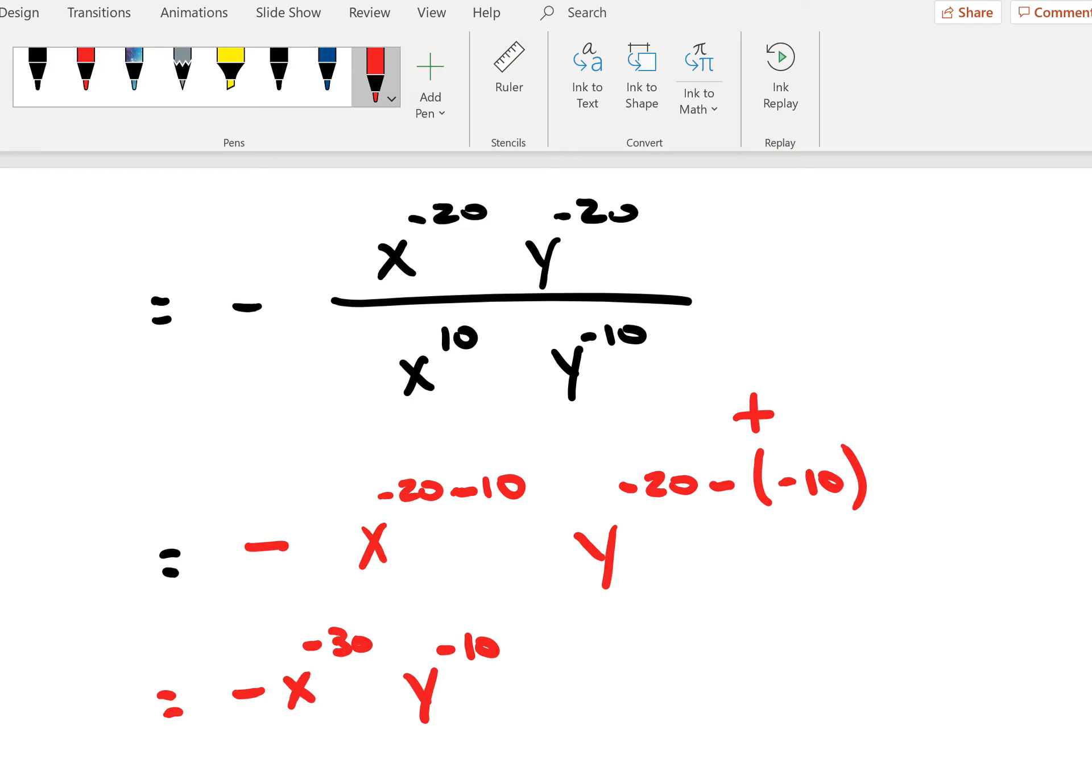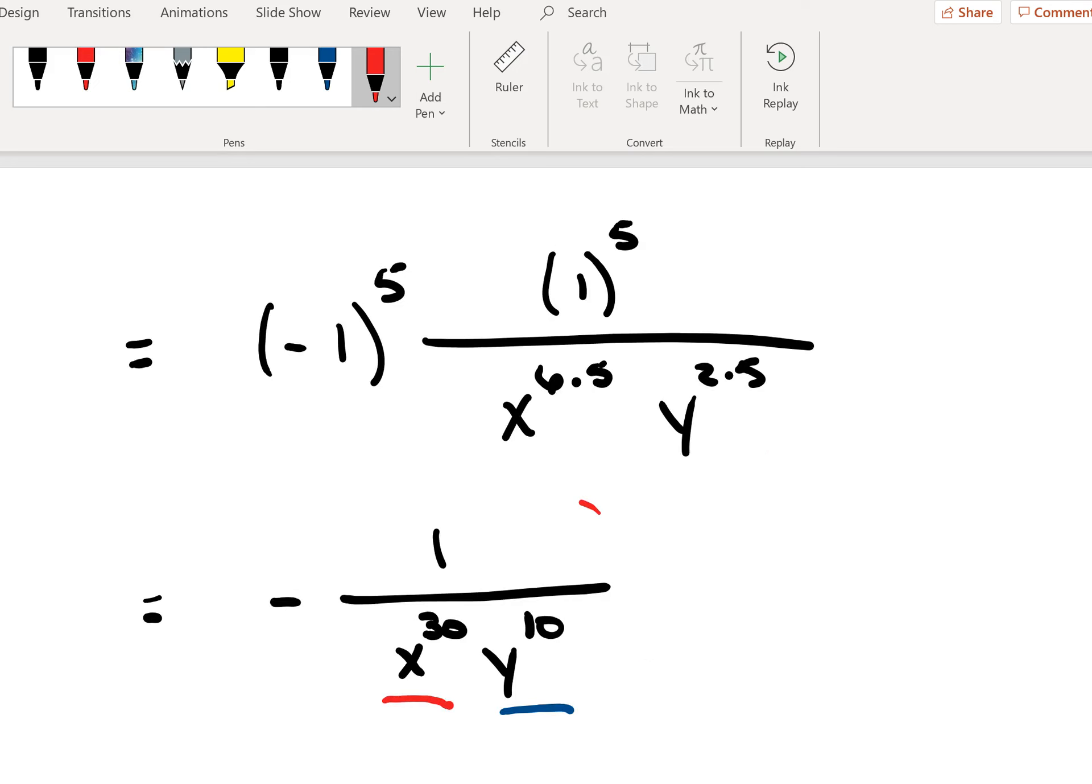And as a result, we would end up with our answer being negative one over x to the thirtieth, y to the tenth. And if we go back and check our previous slide, we see that we do indeed come up with the same exact answer right here.